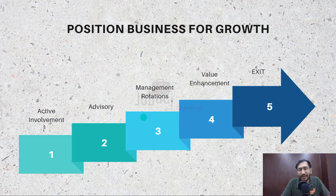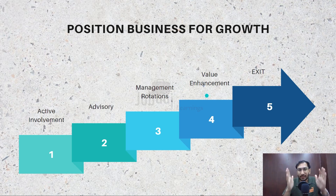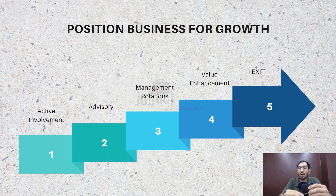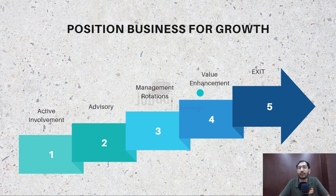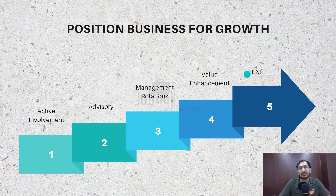PE firms can also go for management rotation — changing the CEO or any other executive if required. Once all these steps have been taken, it will take some time for results to show. It is not going to happen within one month. They will have to wait patiently and see the value come in. It can take two, three, four, or even five years for the value enhancement to materialize. Once they feel their profit target is likely to be achieved, they start looking for bidders and take an exit from the business.